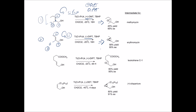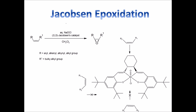Sharpless epoxidation is very simple and is used for functionalized alkenes — just remember that. The next reaction is Jacobsen epoxidation, which is particularly used for unfunctionalized alkenes — there's no functional group attached. So Sharpless is mostly for functionalized alkenes, and Jacobsen is for unfunctionalized alkenes. We add bleaching powder (NaOCl) along with Jacobsen's catalyst, which is a manganese catalyst.